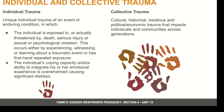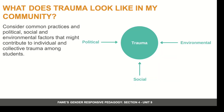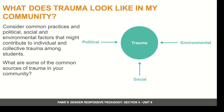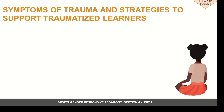Collective trauma refers to cultural, historical, insidious, political, or economic trauma that impacts individuals and communities across generations. Consider common practices and political, social, and environmental factors that might contribute to individual and collective trauma among students. What are some of the common sources of trauma in your community? Review the symptoms of trauma on page 105 and strategies to support traumatized learners on pages 106 to 108 in your toolkit. Select three symptoms of trauma and write out below how you as a teacher would apply strategies to offer support to the learner displaying those symptoms.